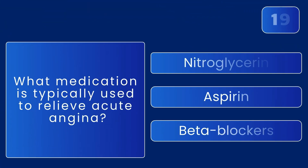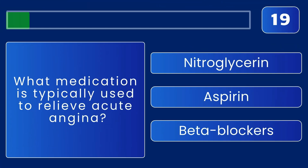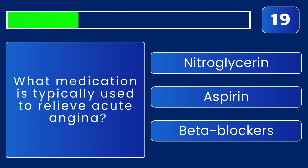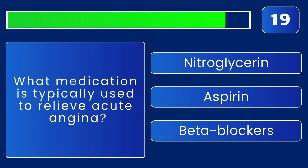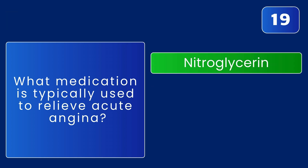What medication is typically used to relieve acute angina? It's nitroglycerin — it relaxes blood vessels and improves blood flow.